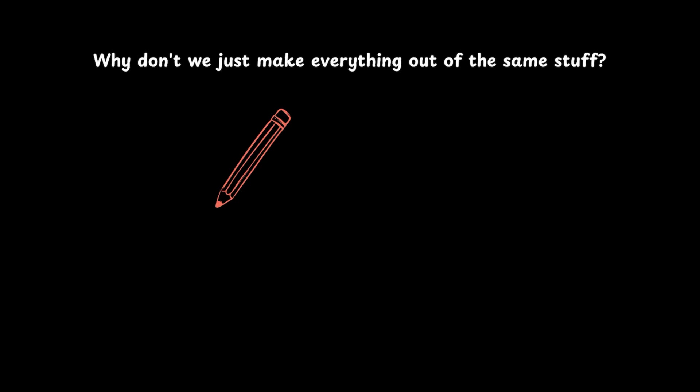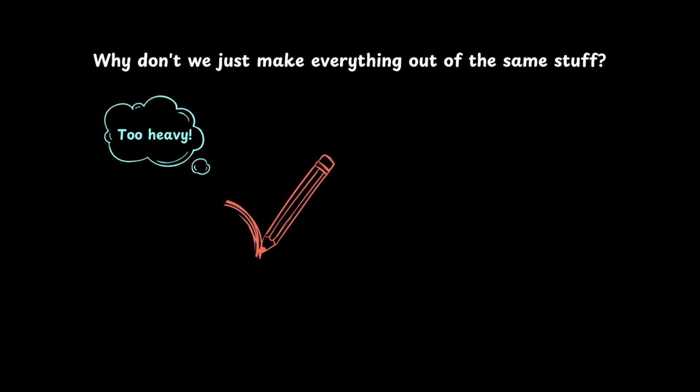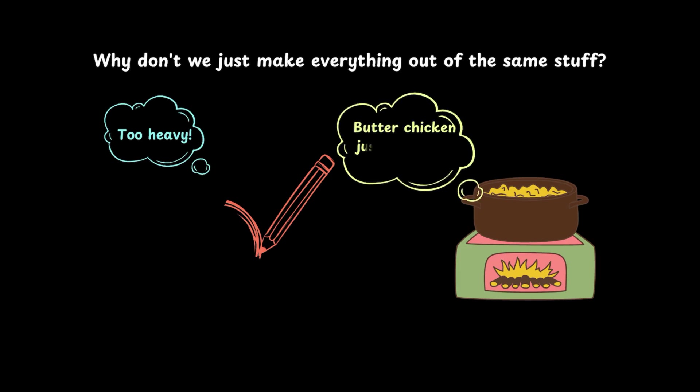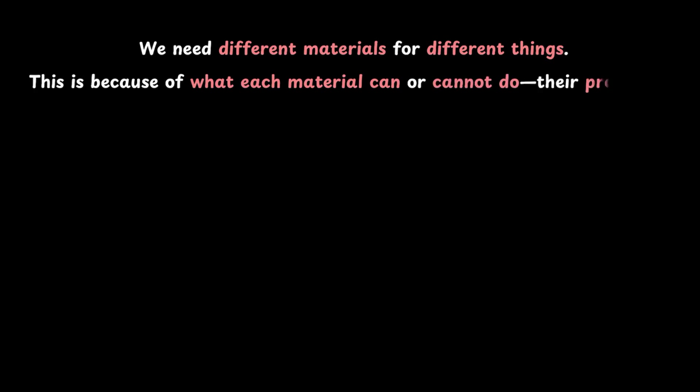Why don't we just make everything out of the same stuff? Why not make pencils out of iron? I mean you could, but wouldn't it be too heavy to write with? Or imagine cooking in a pan made of wood – if you are aiming for burnt chicken instead of butter chicken. So bottom line, we need different materials for different things. But the real question is why? And the answer lies in what each material can or cannot do – that is, their properties.